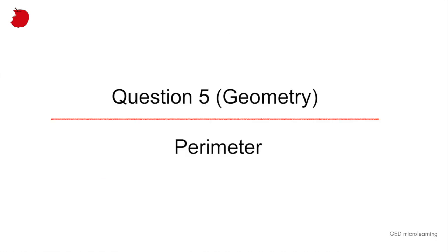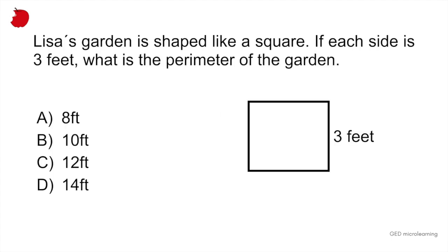The last problem is a geometry problem that looks at perimeter of a square. Lisa's garden is shaped like a square. If each side is 3 feet, what is the perimeter of the garden? And they're giving you the shape of the garden, which is a perfect square, and they give you one side, which is 3 feet.